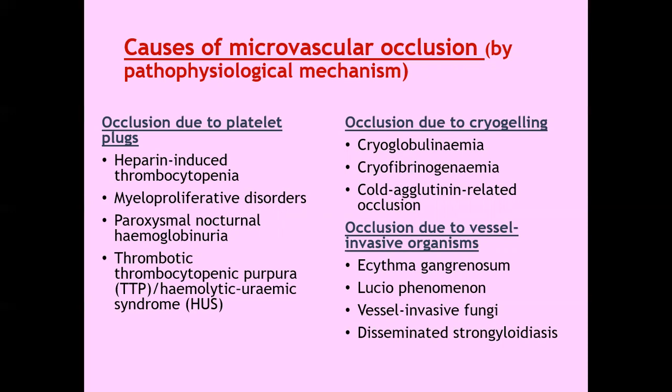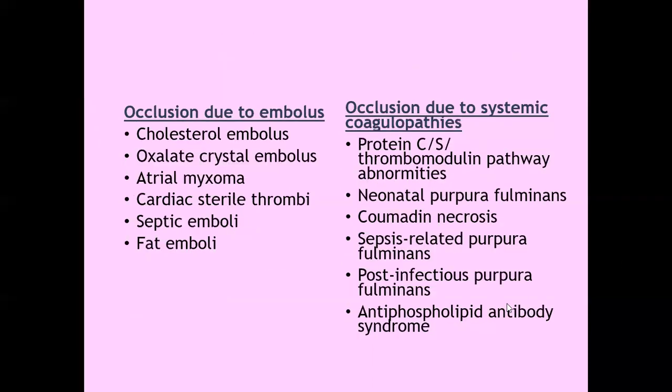Occlusion due to cryogelling develops in cryoglobulinemias, cryofibrinogenemias, and cold agglutinin-related occlusions. Occlusion may also occur because of vessel-invasive organisms like ecthyma gangrenosum, Lucio phenomenon, vessel-invasive fungi, and disseminated strongyloidiasis. Occlusion may occur because of embolism — cholesterol embolism, oxalate crystal embolism, atrial myxoma, cardiac sterile thrombi, septic thrombi, or fat embolism.